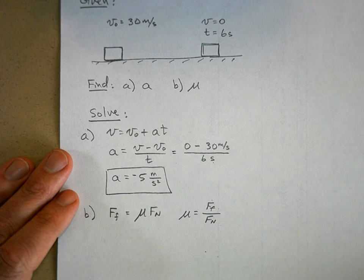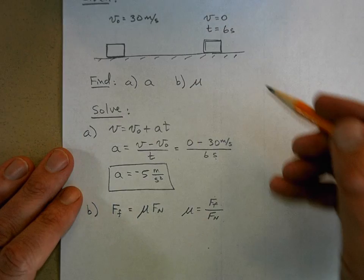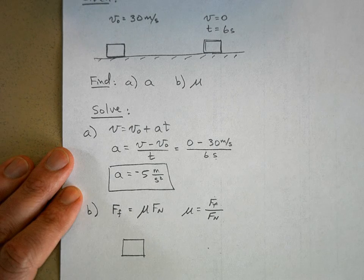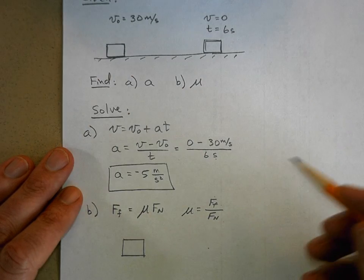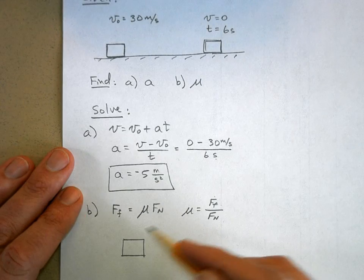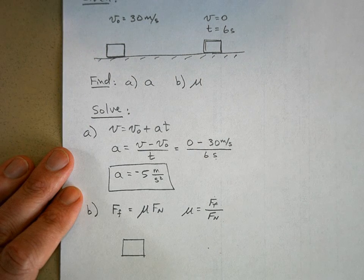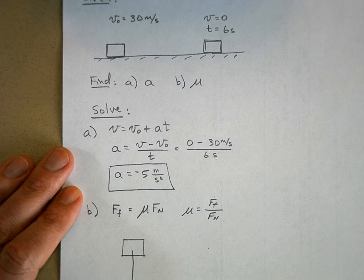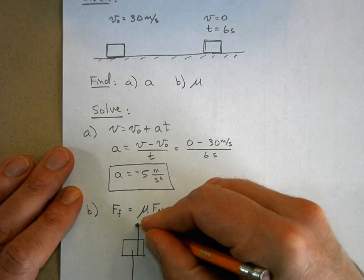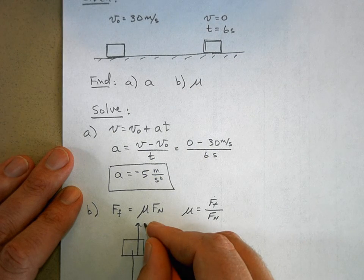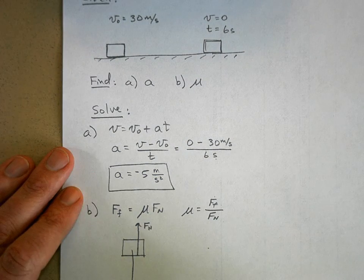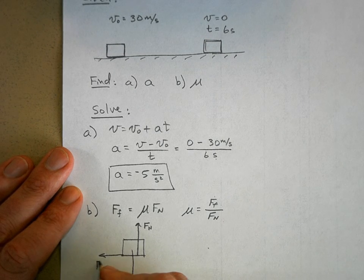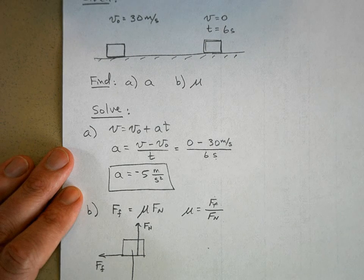So let's engage that procedure for forces. I'm going to draw the free body diagram. That's step two of the procedure, right? Step one is to do given, find, and solve, and now step two is to draw the free body diagram. Gravity is pulling down on the crate, the floor is pushing up on the crate with a normal force, and as this thing slides to a stop, we've got kinetic friction pulling it to the left.